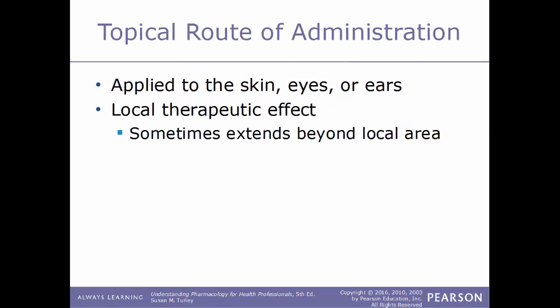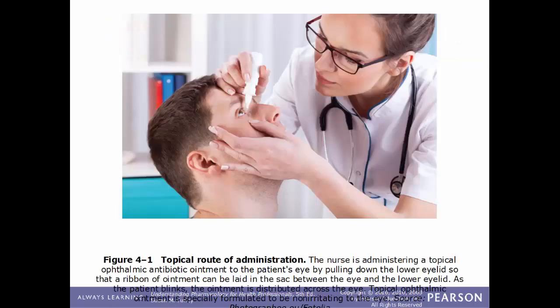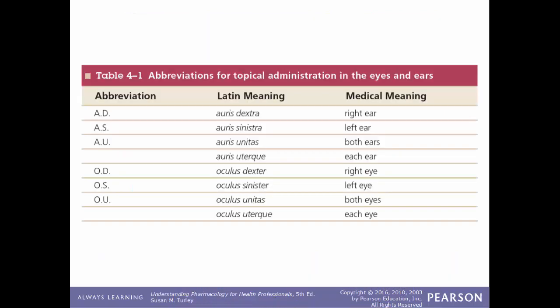The first route is the topical route of administration. This is applied to the skin, eyes, or ears and will have a local therapeutic effect, such as eye drops or ear drops. The effect will sometimes extend slightly beyond the local area but usually not far. For example, eye drops administered to a patient would only be felt locally in the eyes.